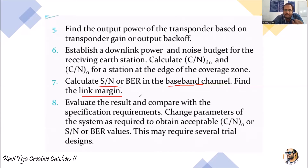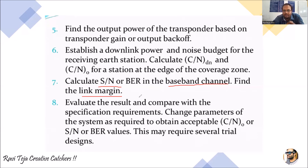The eighth step involves multiple trial runs. We run the uplink design several times, calculating C/N and S/N each time, and also run the downlink procedure several times calculating C/N and S/N. Taking those results, we compare the C/N and S/N values of both uplink and downlink to evaluate the results. By repeating this process multiple times, we can compare values and reach a conclusion about whether any change in system parameters is needed.